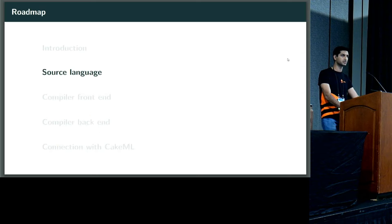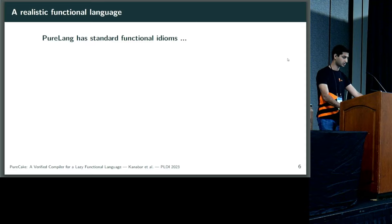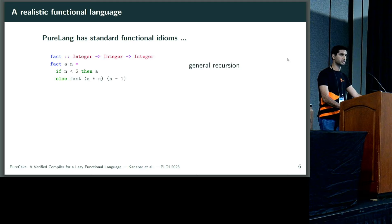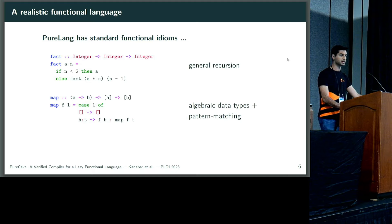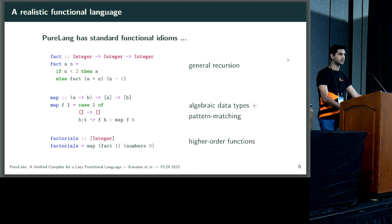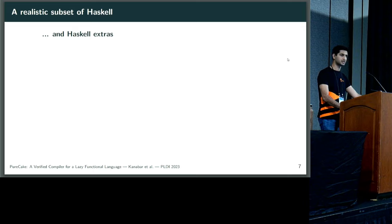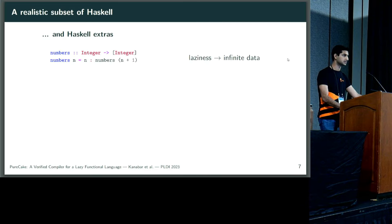I'll start by considering the source language that PureCake accepts. It's known as PureLang, and it has standard functional features, such as general recursion, shown here by the factorial function, algebraic data types and pattern matching, exemplified by the map function over lists, and higher order functions, allowing us to map that factorial function over a list of numbers.